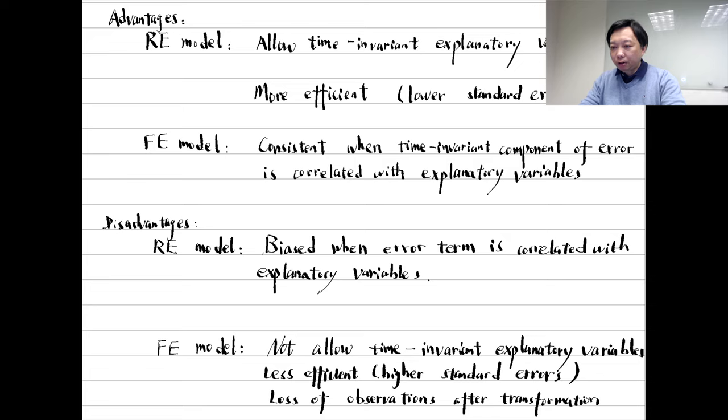By contrast, the fixed effects model alleviates the endogeneity problem by using some transformations to eliminate the time-invariant component of the error term. In other words, the fixed effects model allows the correlation between the explanatory variables and a part of the error term that does not change over time, such as the characteristics or personalities of an individual or their family background.